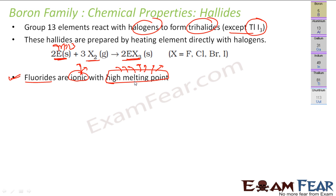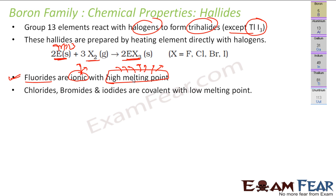Since fluorine has high electronegativity, fluorides are generally ionic with high melting and boiling points. Other halides — chlorides, bromides, and iodides — are covalent, and since they are covalent they have low melting points.